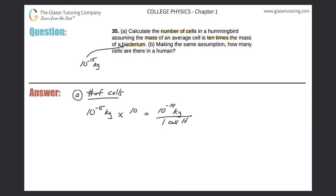Now what we need to do is use this ratio to find the number of cells in a hummingbird. But we also need to know the average mass of a hummingbird. The average mass of a hummingbird is going to be about 0.004 kilograms — you can look that up on Google.